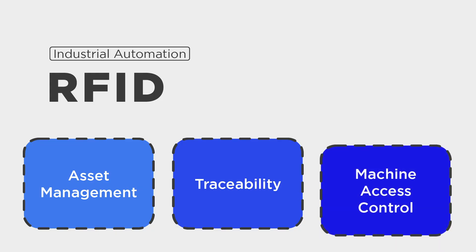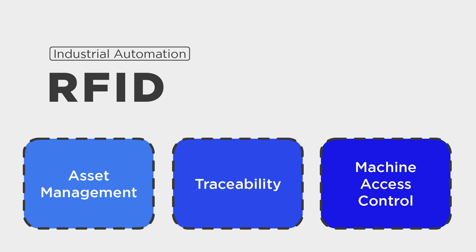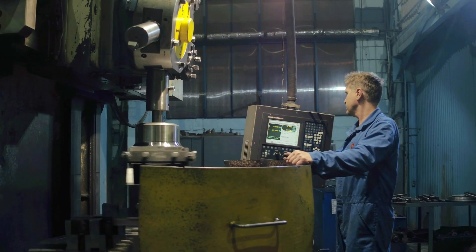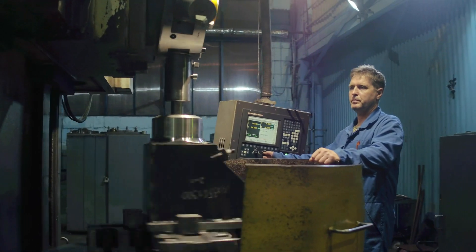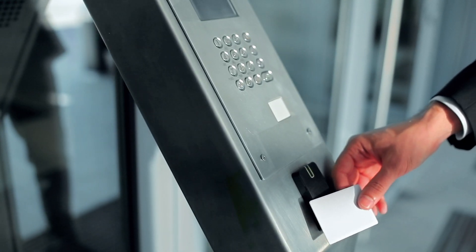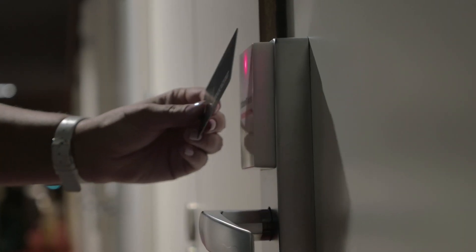Lastly we have the third bucket, which is machine access control. This is going to be for people trying to allow access to machines for authorized users only. A common question we get asked is if we can use building access badges for machine access. Unfortunately those badges typically operate on an encrypted RFID signal and will not work for machine access. However, we do have solutions that have tamper-proof RFID stickers that can be applied to the back side of a badge and be used in the same way.